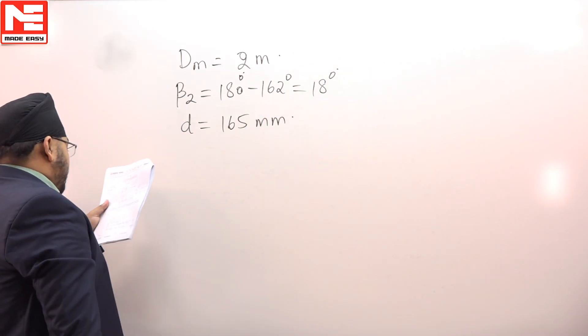The jet diameter is 165 mm, and the pressure behind the nozzle is 1000 kilopascals. We can convert this pressure into head.